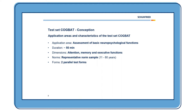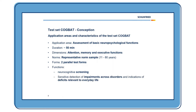We have two different test forms which are parallel to each other, so we can have valid follow-up testing. The functions are mainly neurocognitive screening — developed for sensitive detection of impairments across disorders and indications of deficits relevant to everyday life. It is the basis for further more specific neurocognitive assessments. If you already suspect dementia, we recommend a more specific test set like the CFD.